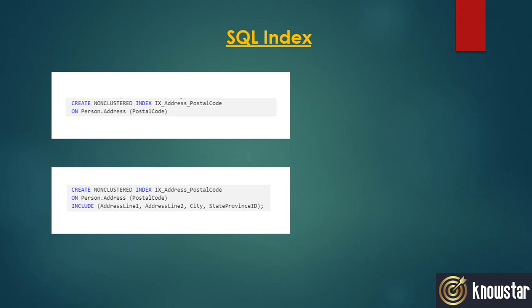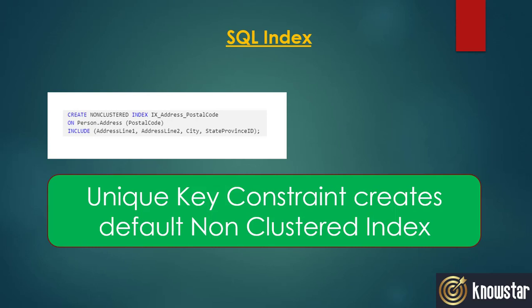As with the clustered index, a non-clustered index is also created by default if a unique key constraint is specified on the table. All these default options of creating a clustered or non-clustered index using the primary key or unique key constraints can be overwritten by explicitly specifying the type of index you need that particular constraint to create.